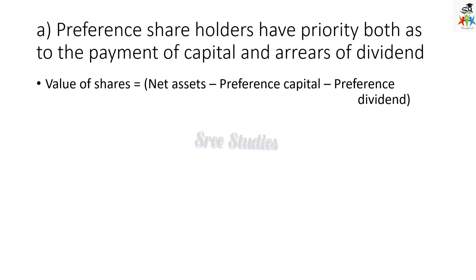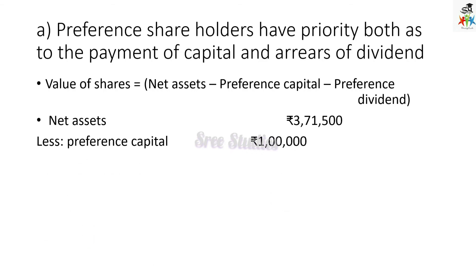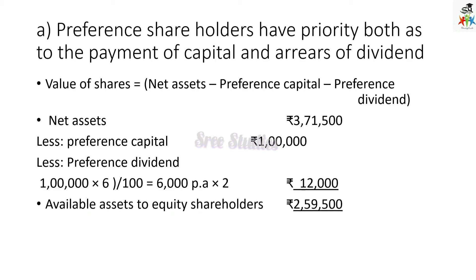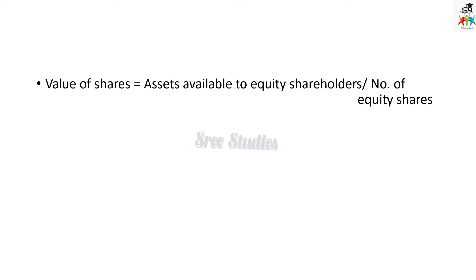First option: preference shares have priority both as to the payment of capital as well as arrears of dividend. The formula: assets available to equity shareholders = Net Asset minus preference share capital minus preference dividend arrears. Net asset is 3,71,500; preference capital is Rs. 1,00,000; preference dividend is Rs. 12,000 (i.e., 1,00,000 × 6% = Rs. 6,000 per annum × 2 years = Rs. 12,000). Assets available to equity shareholders = Rs. 2,59,500. Value of share = 2,59,500 ÷ 30,000 equity shares = Rs. 8.65.